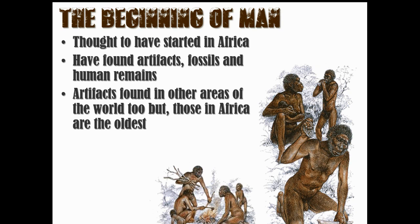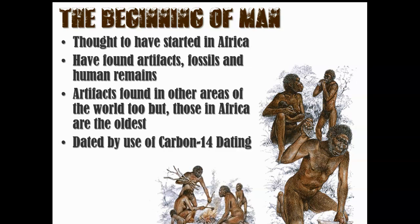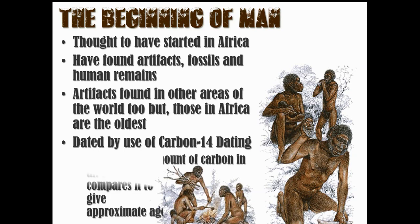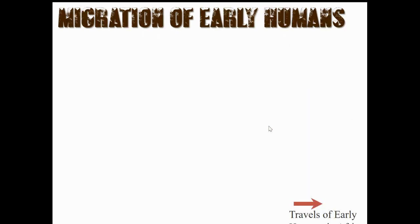We have a theory that humanity started in Africa and then we branched out. Artifacts were found in other parts of the world, but we figured out that Africa is the oldest. How do we figure out it's the oldest? We use carbon-14. What it does is measure the amount of carbon in an object — there's carbon in everything: you, artifacts, bones, anything. We determine how much carbon is left and from that we can determine how long something has been there.